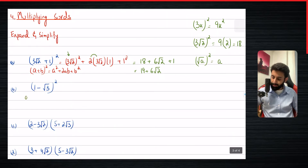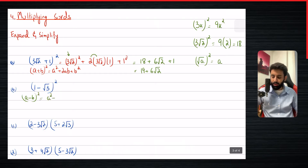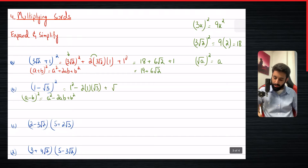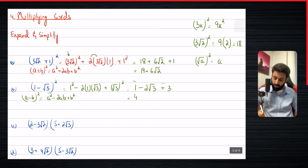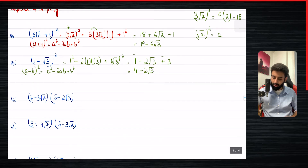Now we have something that resembles (a - b)², which equals a² - 2ab + b². That means 1² - 2 × 1 × √3 + (√3)². This becomes 1 - 2√3 + 3. Since 3 and 1 can be added, the final answer is 4 - 2√3.